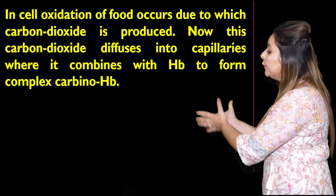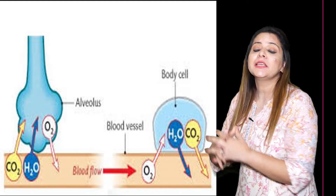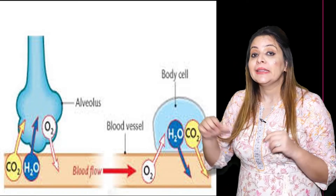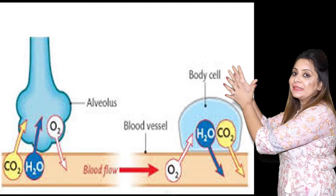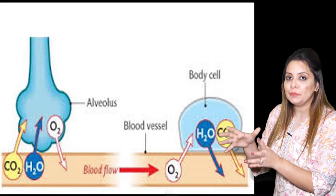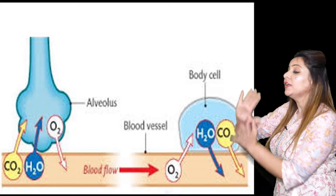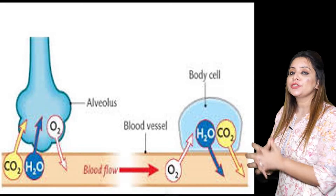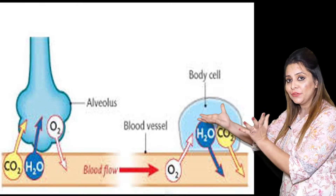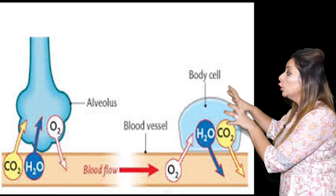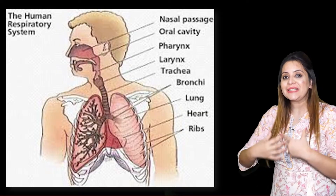The CO₂ produced in the cell diffuses into the blood, where it combines with hemoglobin to form carbaminohemoglobin. This blood flows back to the alveoli, where CO₂ concentration is lower in the alveoli than in the blood, so the complex breaks and CO₂ diffuses into the alveoli. From there, CO₂ follows the same route back and is exhaled out.